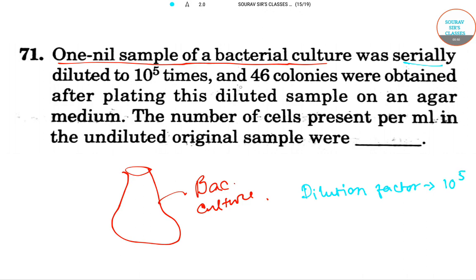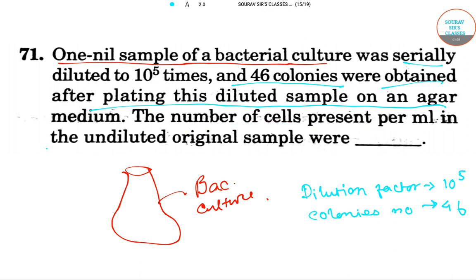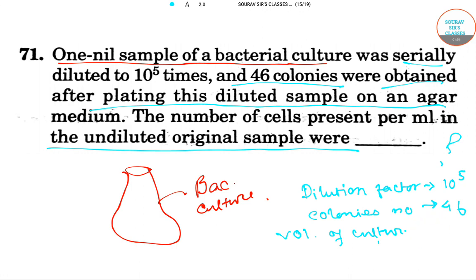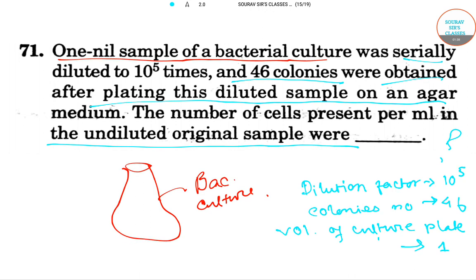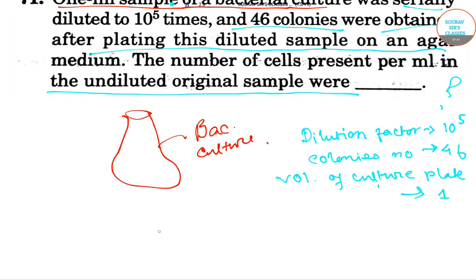46 colonies were obtained after plating this diluted sample on an agar medium. The question asks for the number of cells present per mL in the undiluted original sample. We also know that the volume of culture plated is 1 mL.